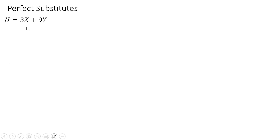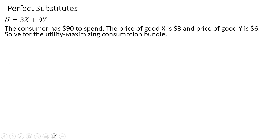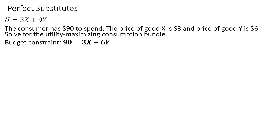Now let's look at perfect substitutes. Here's a perfect substitutes utility function. The consumer once again has $90 to spend. The price of good X is $3 and the price of good Y is $6. We want to solve for the utility maximizing consumption bundle. The first thing we'll do is form the budget constraint — dealing with the same income and same prices, the budget constraint takes the same form as before.